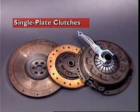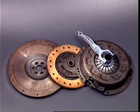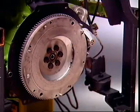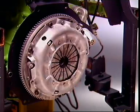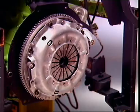Most light vehicles use a single plate clutch to transmit torque from the engine to the transmission input shaft. The flywheel is the clutch driving member. The clutch unit is mounted on the flywheel's machined rear face so that the unit rotates with the flywheel.